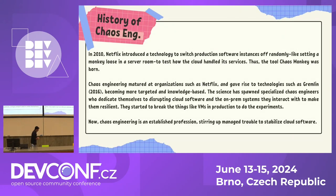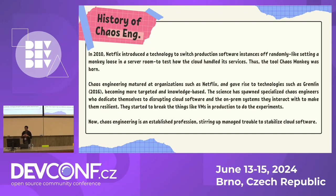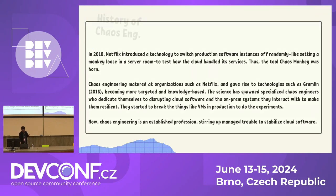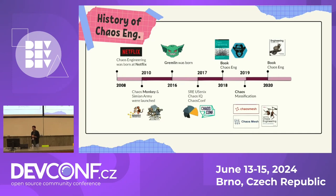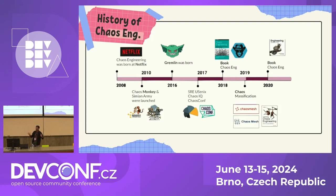Now I'll start with the history of chaos engineering. Let's go back to the pre-cloud era when AWS, Azure, and GCP were not actively there — we had virtual machines. Netflix started this practice in 2008. They were going to their production environment and randomly killing a few virtual VMs. They tested this for a few times, and later got some success. In 2010, they introduced Chaos Monkey. Then Gremlin came in 2016, which is also a very popular tool. That's a very basic timeline — the history of chaos engineering — so it's not a very new thing.